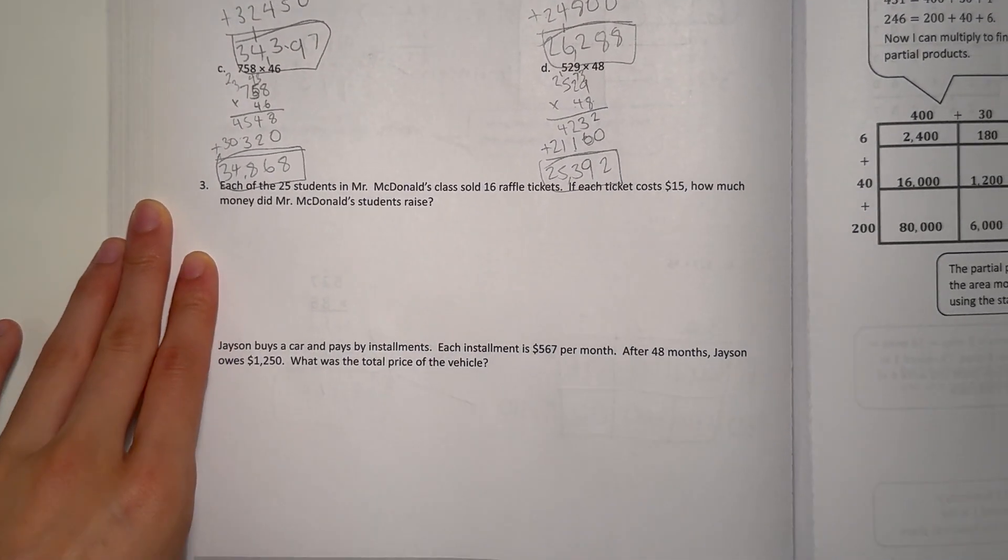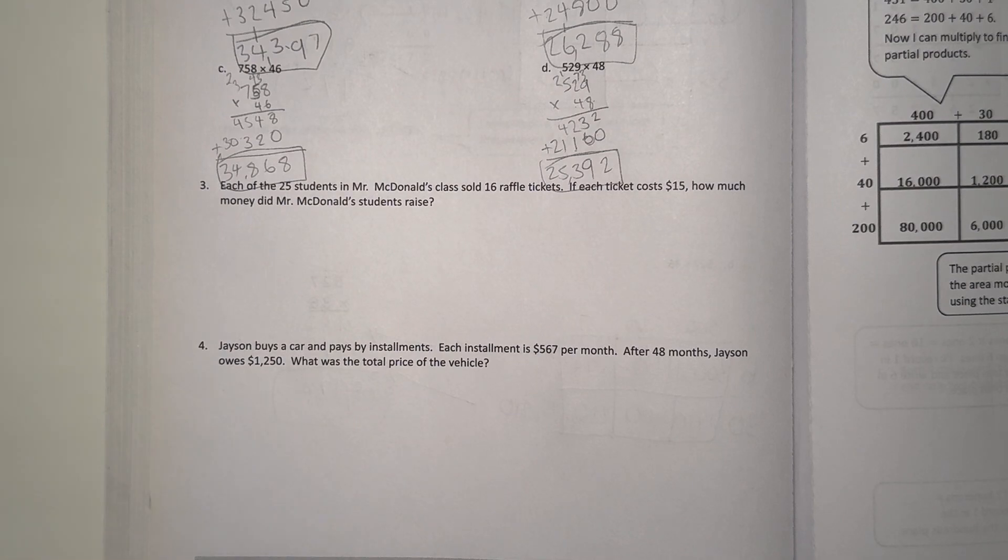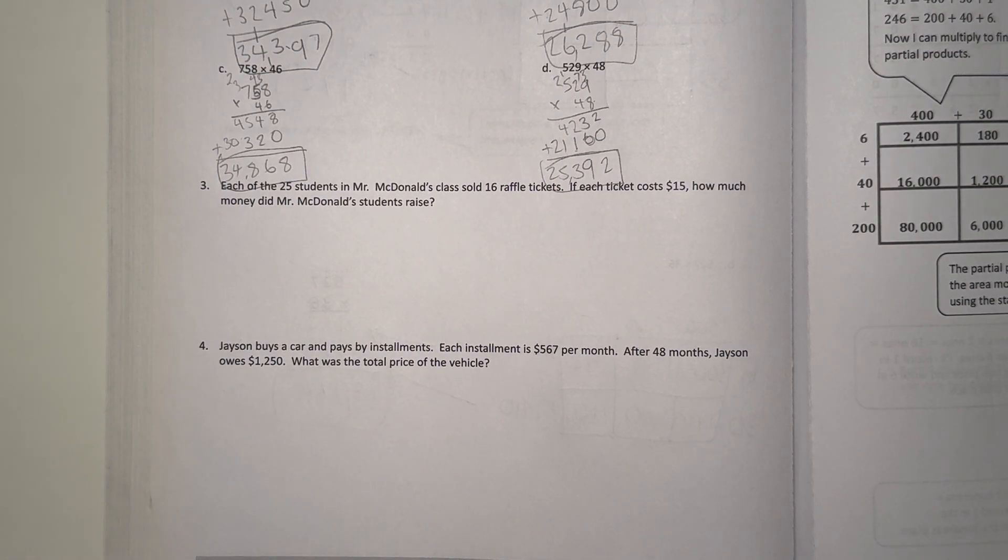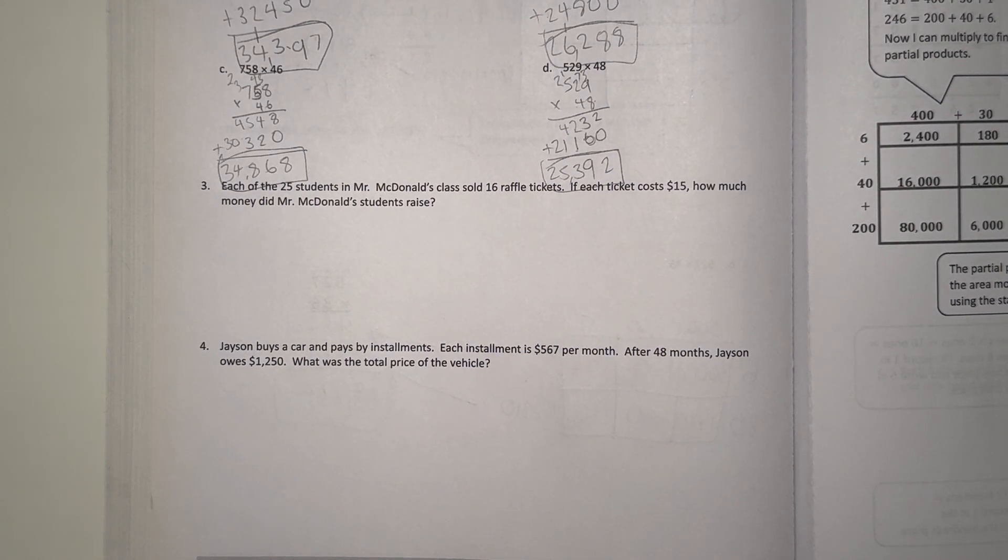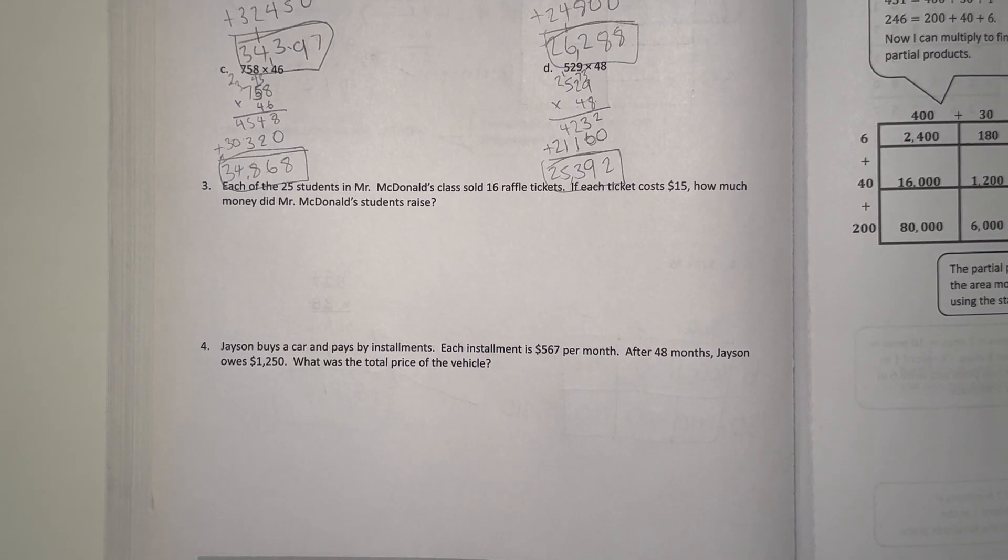Alright, now number 3. Each of the 25 students in Mr. McDonald's class sold 16 raffle tickets. If each ticket costs $15, how much money did Mr. McDonald's class students raise?